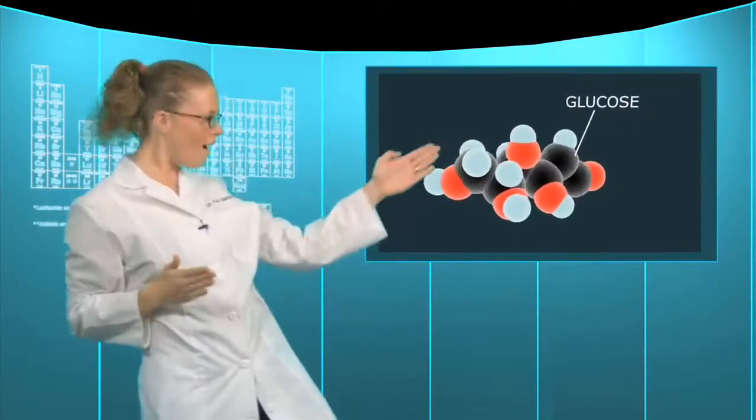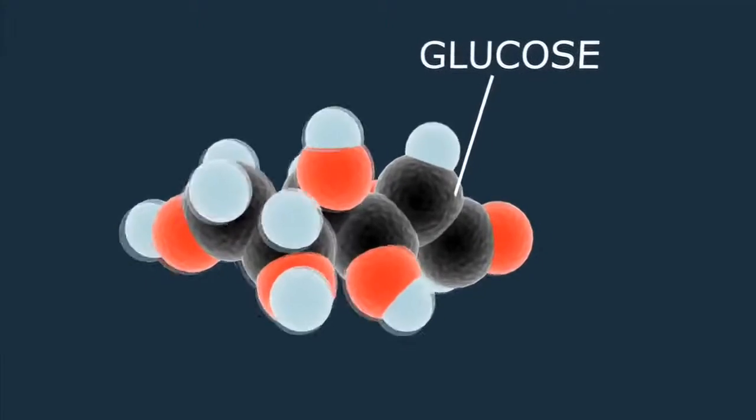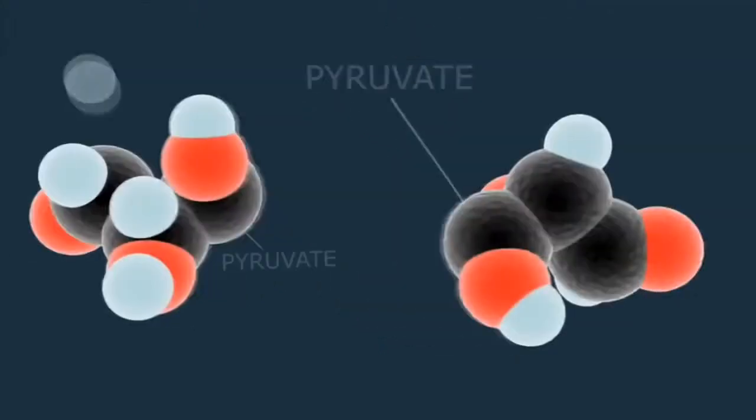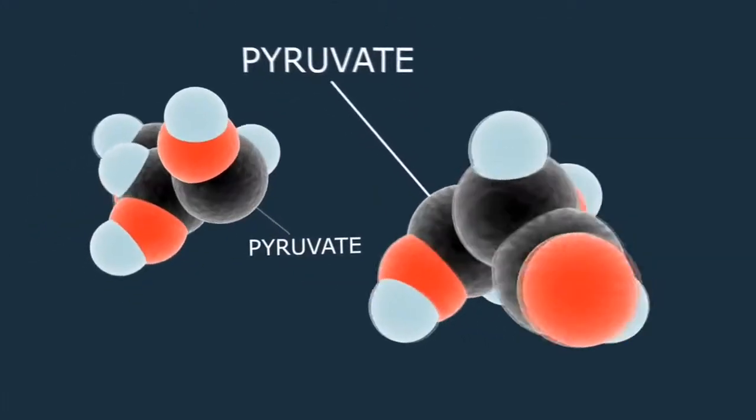So to break it down, cells take the simple sugar glucose and split it into a compound called pyruvate through a process called glycolysis. Then, depending on the organism, the pyruvate can go down one of two different fermentation pathways.